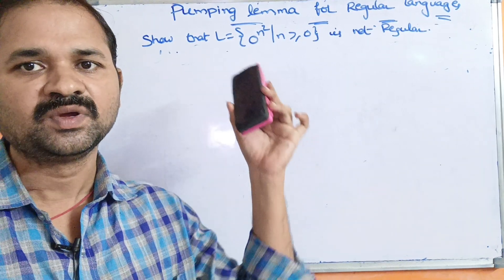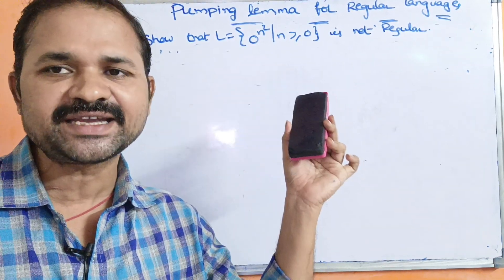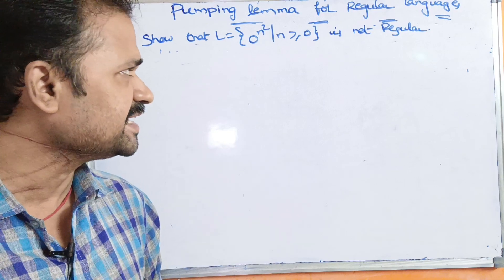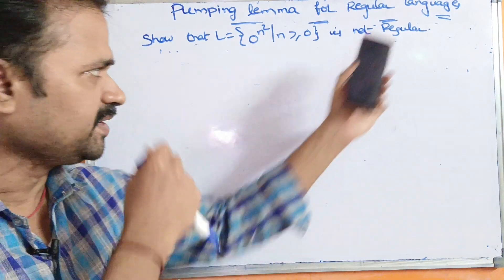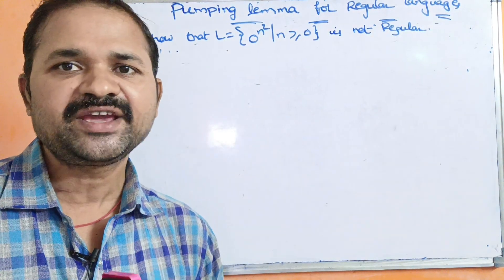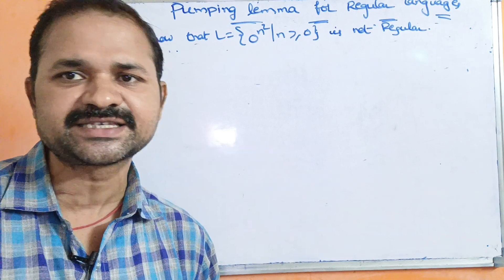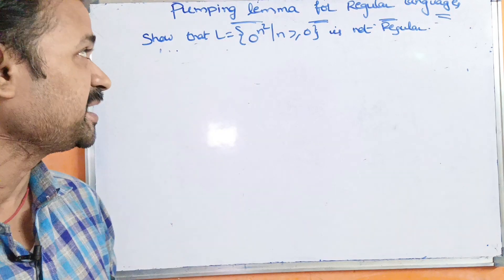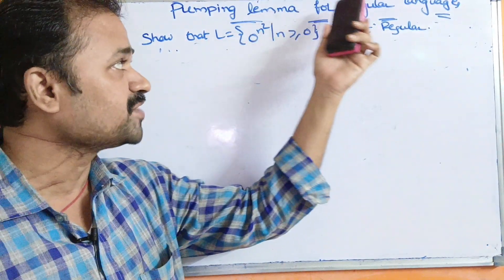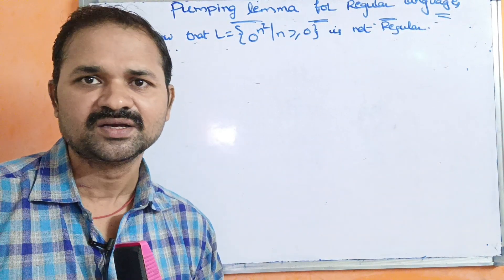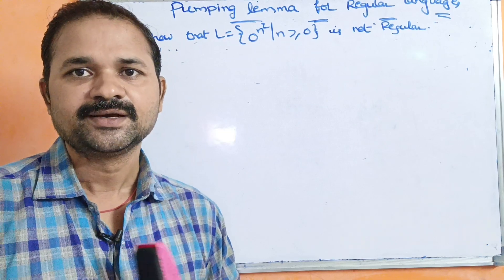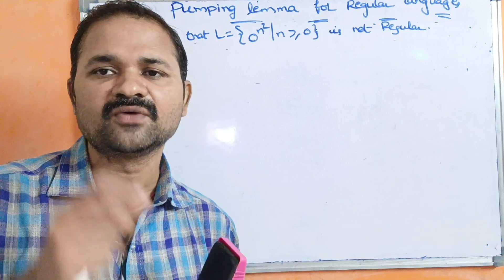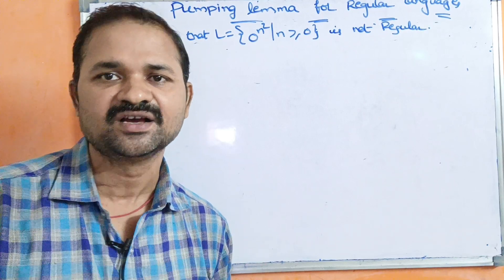Let us see this problem: show that L = {0^(n²) | n ≥ 0} is not regular. We can prove whether a language is not regular by using the pumping lemma. The concept is called the pumping lemma for regular languages. By using pumping lemma, we can prove a language is not regular.